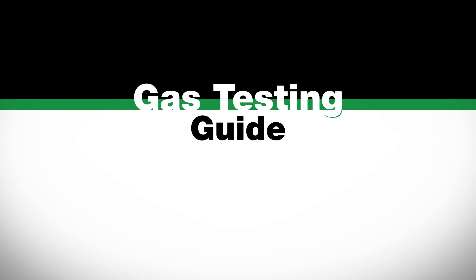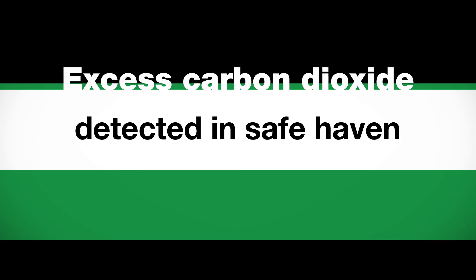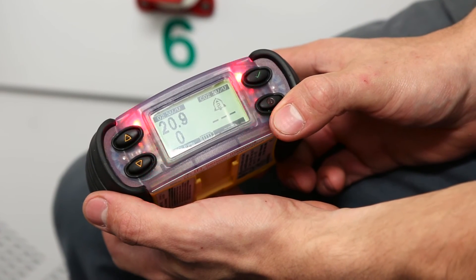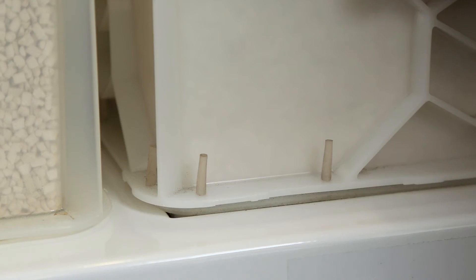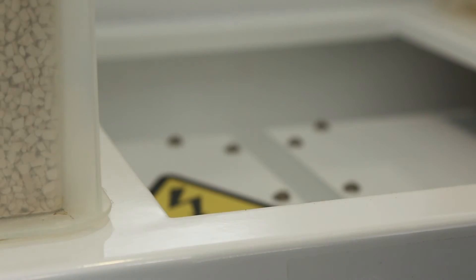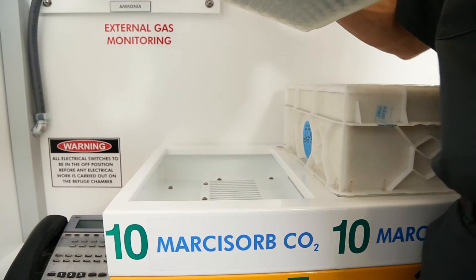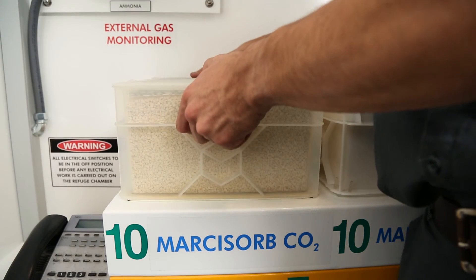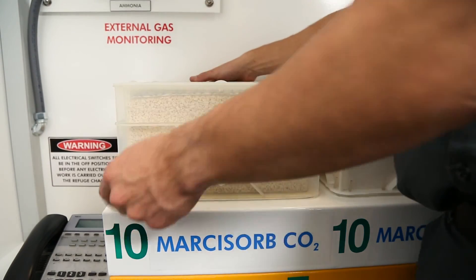Gas testing guide — Excess carbon dioxide detected in safe haven. If carbon dioxide levels exceed 1%, remove all Marcosorb CO2 cartridges from the scrubber and replace with new cartridges.